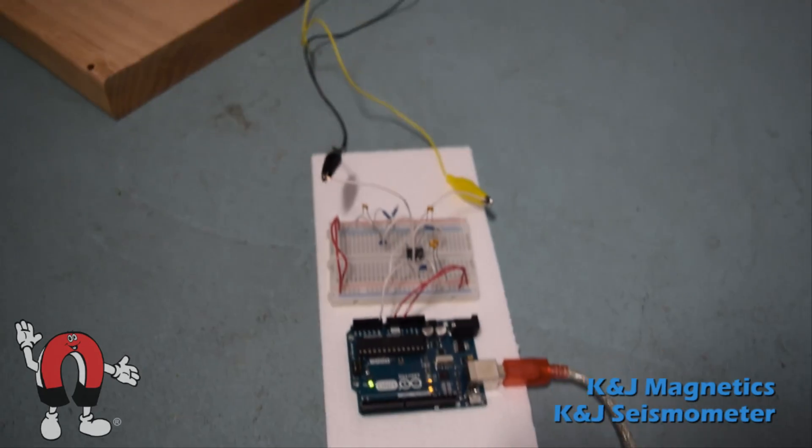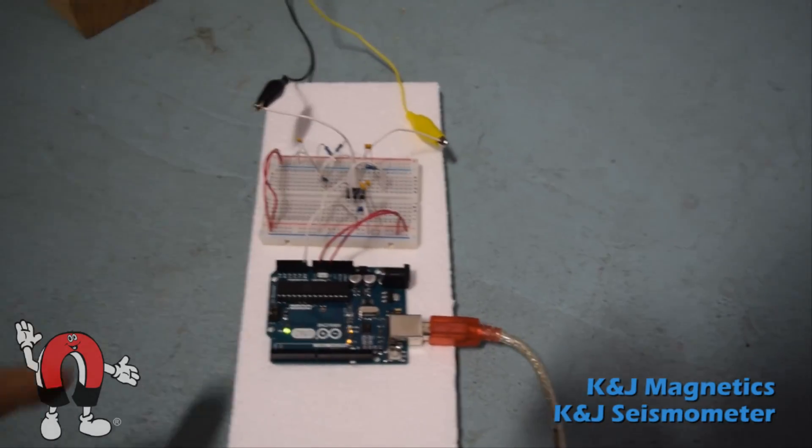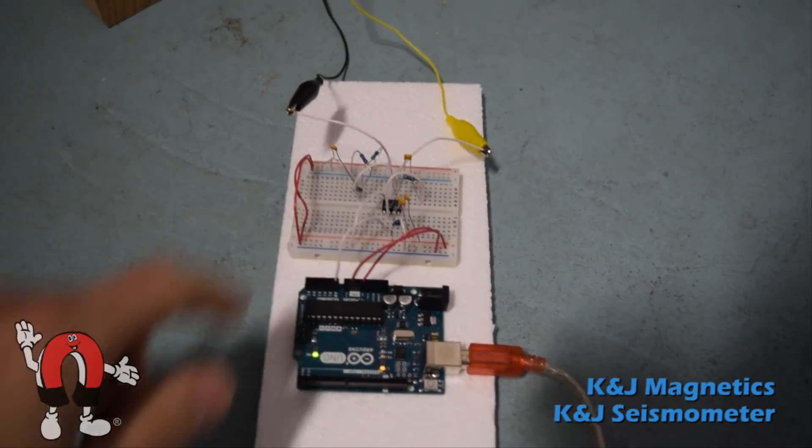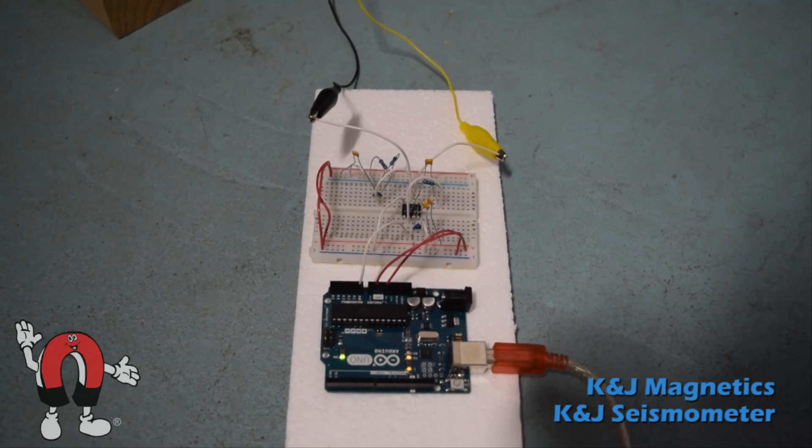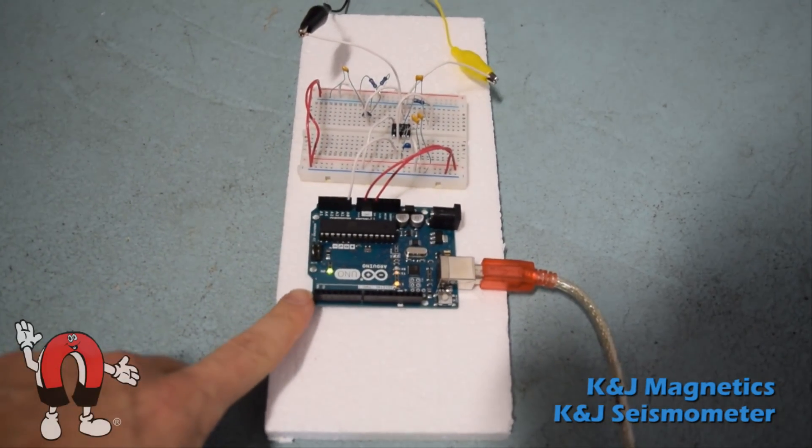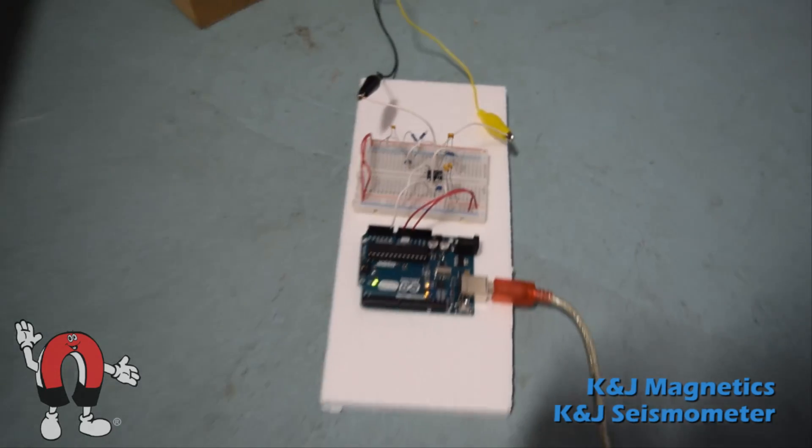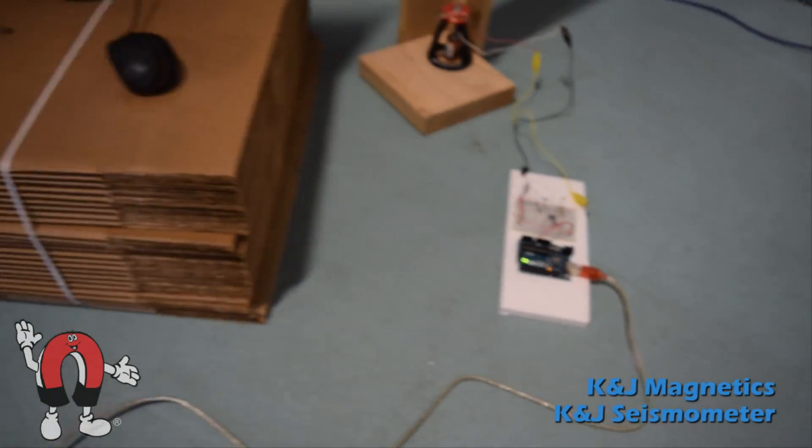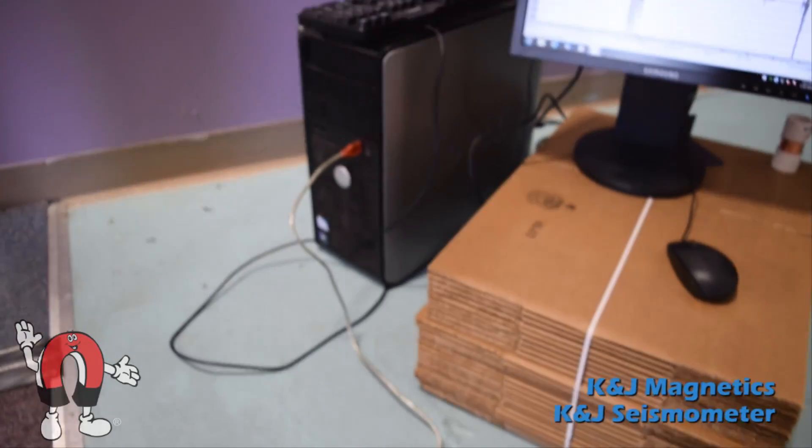Zooming out, that's connected to a little circuit. This guy is the amplifier, which amplifies the weak signal. This is an Arduino board, which converts that signal into a digital signal, which it sends via USB to the computer.